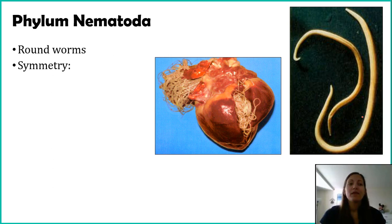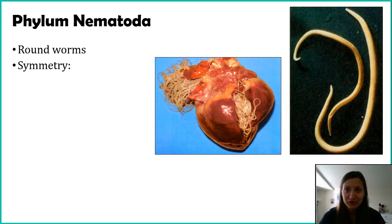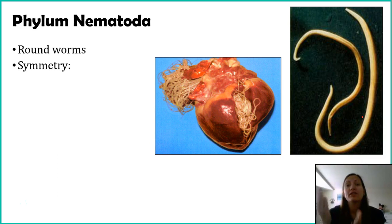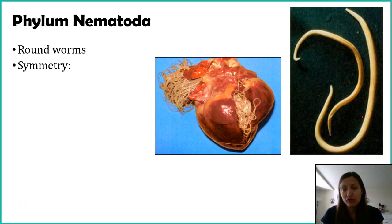Recalling our phylogenetic tree, phylum Nematoda is on the branch of bilaterally symmetrical organisms. This can be a little hard to imagine with a worm — if you hold it upright, it looks like a circle, and circles can have many lines of symmetry. But the way a worm is organized, if you cut it along its length, the left and right sides are similar. Cut it the other way, and they're not. So these are bilaterally symmetrical organisms.